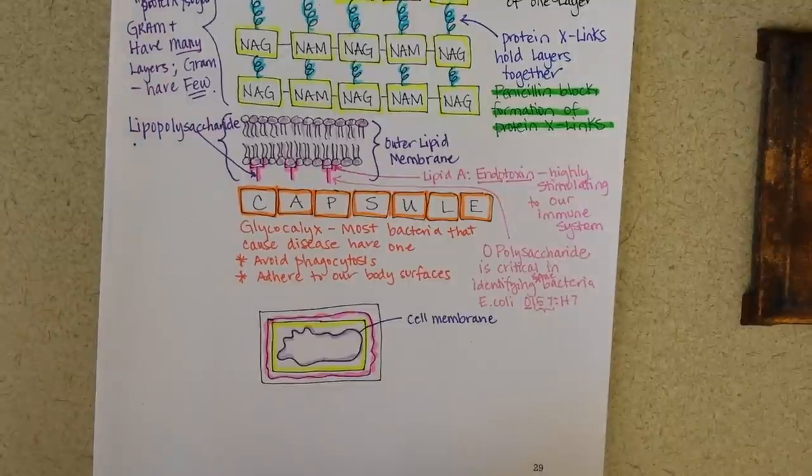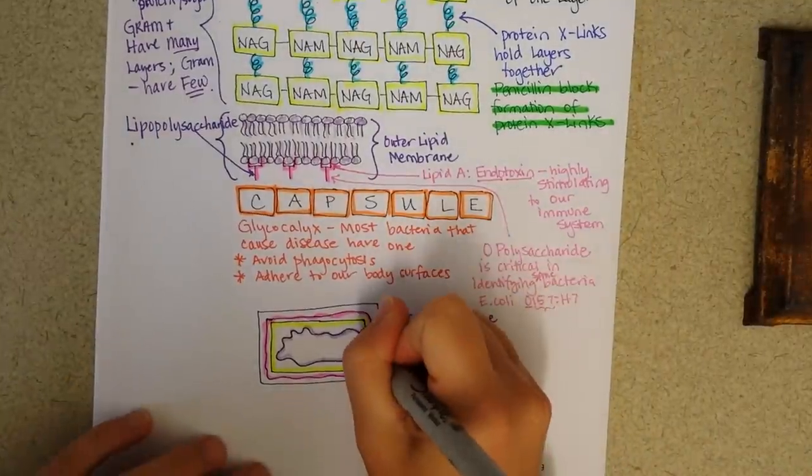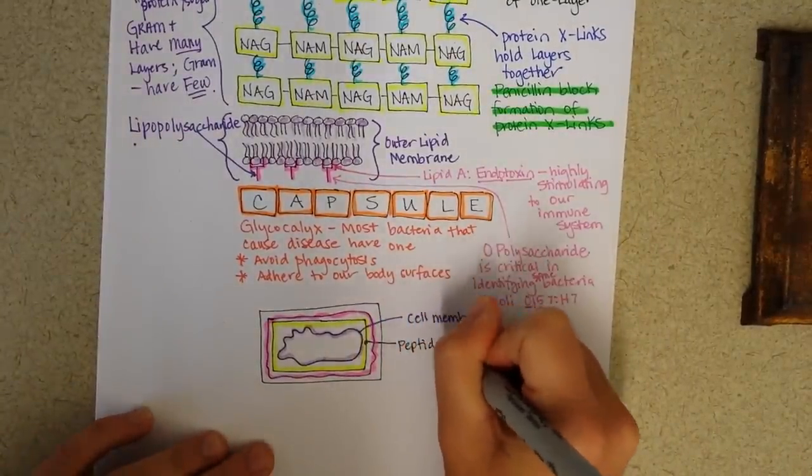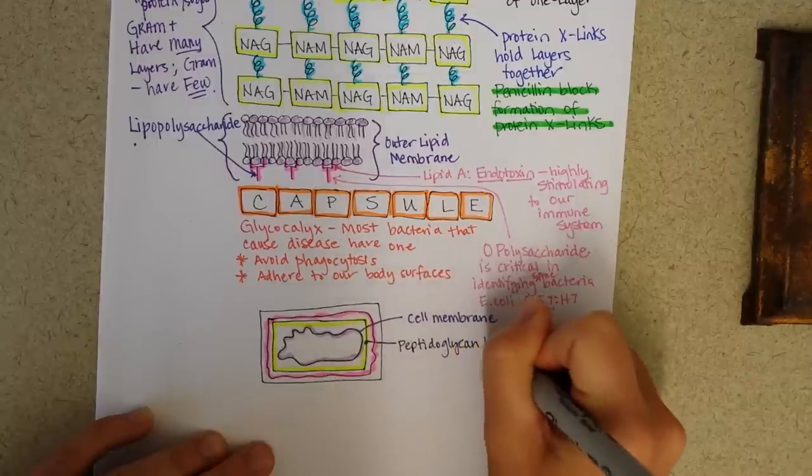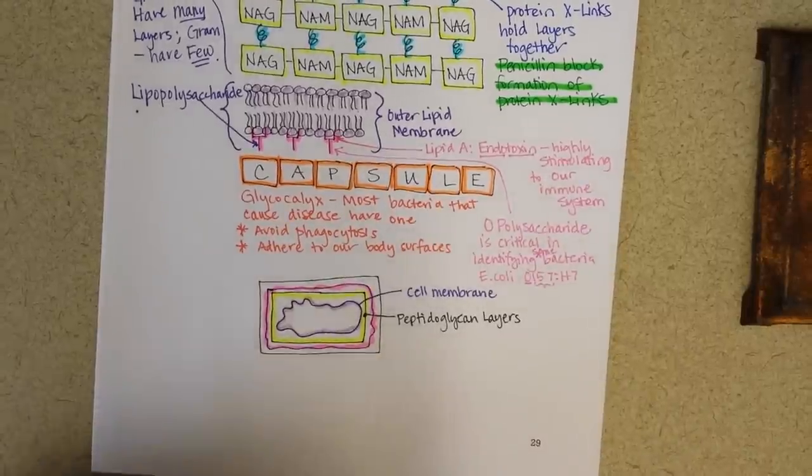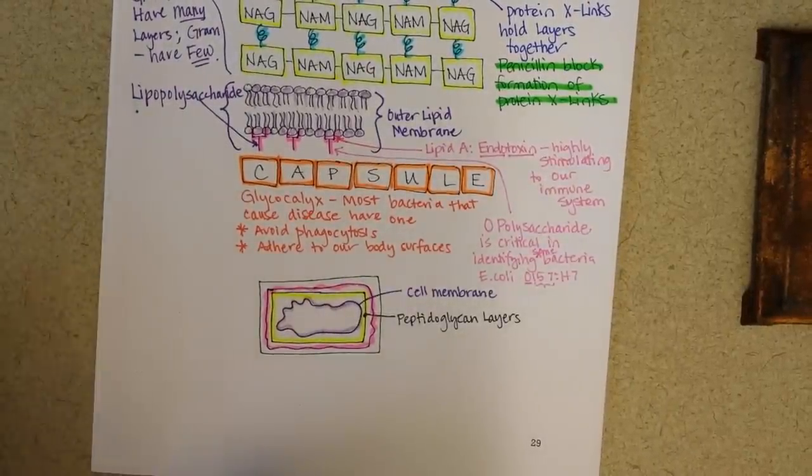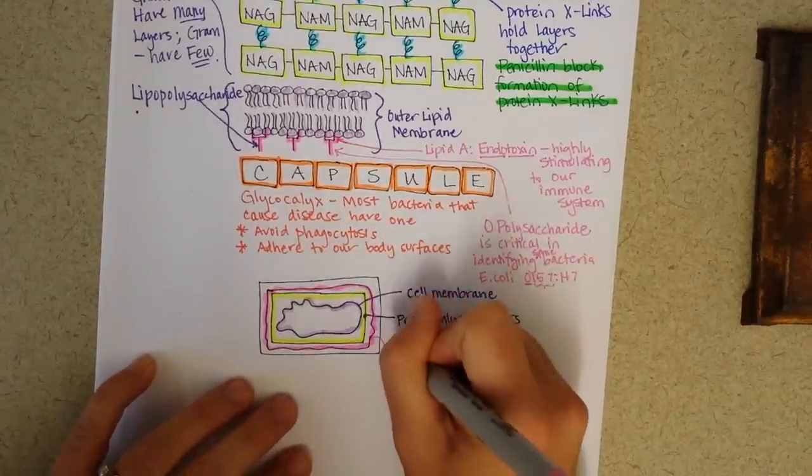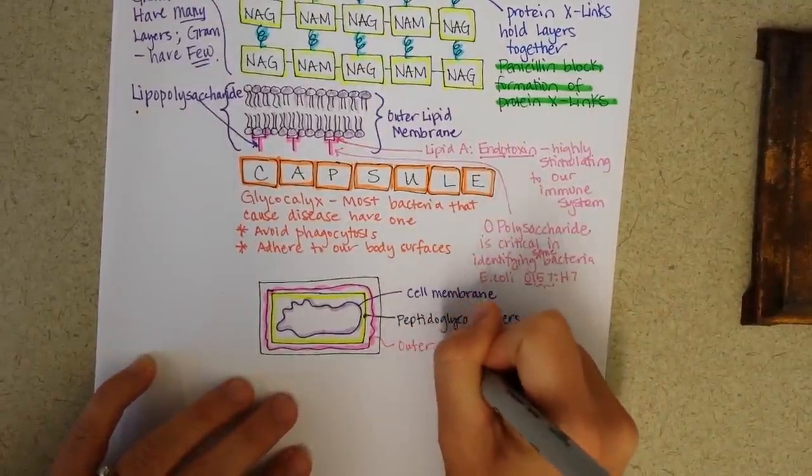And then in purple, oh I guess I didn't label that. So sorry, the yellow is the peptidoglycan layers. And then in purple, or sorry, pink, is the outer lipid membrane of gram-negative.